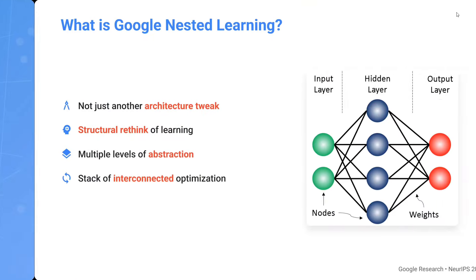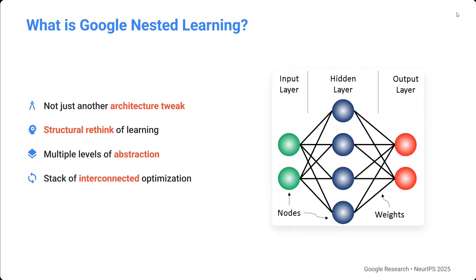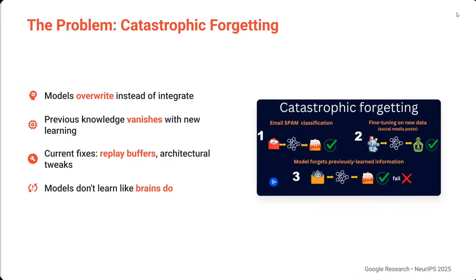This is what Google Nested Learning is trying to solve. It's not just another architecture tweak — it's a structural rethinking of how learning happens in machine learning, involving multiple levels of abstraction and a stack of interconnected optimizations. When training a deep learning model, it's not just one weight set getting updated — it's a pipeline that is getting updated every time.